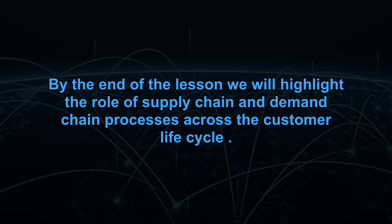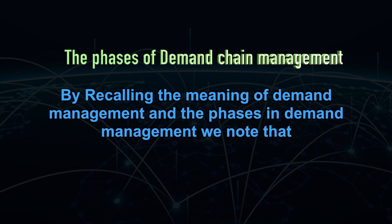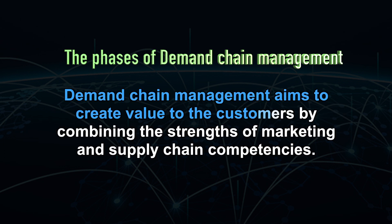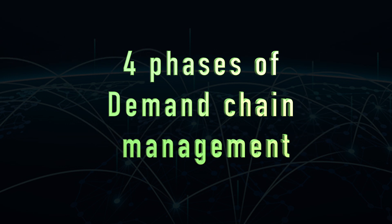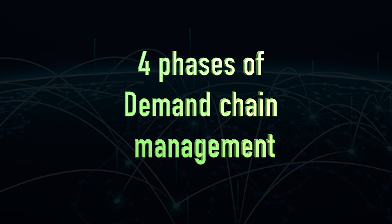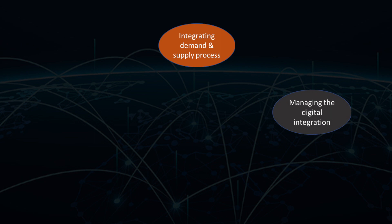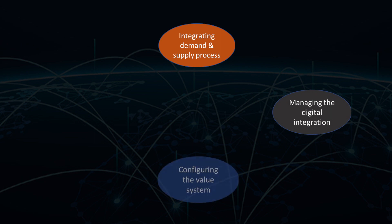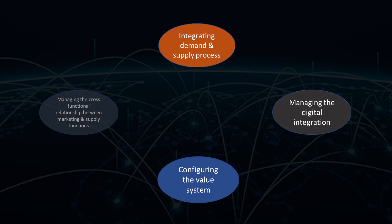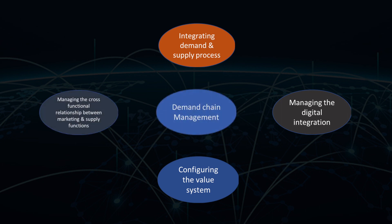Now let us move on to the phases in demand management. By recalling the meaning of demand management and the phases in demand management, we note that demand chain management aims to create value to the customers by combining the strengths of marketing and supply chain competencies. The four phases of demand chain management are as follows. In the previous lesson we understood the first phase of demand management from the fusion model of integrated customer lifecycle, demand processes and supply processes.